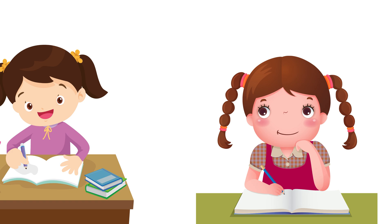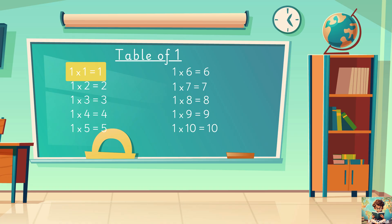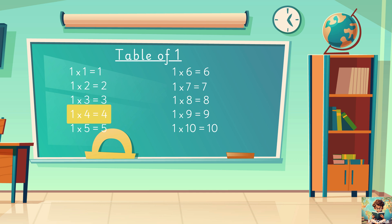Can we say it together now? 1 one's are 1. 1 two's are 2. 1 three's are 3. 1 four's are 4. 1 five's are 5.